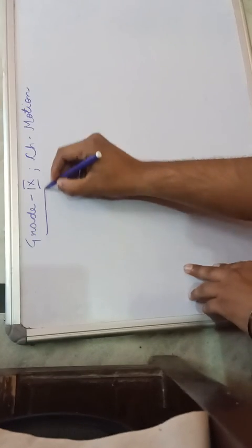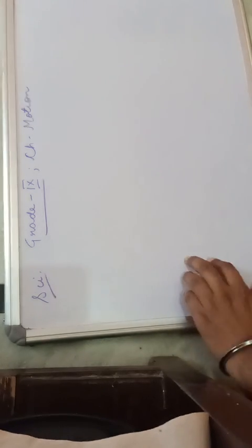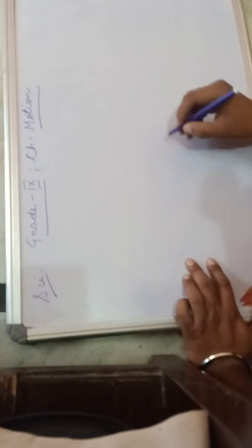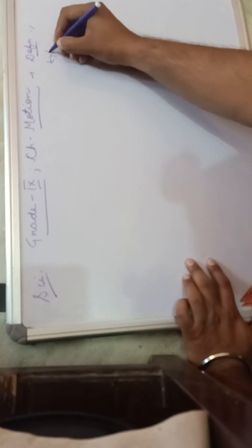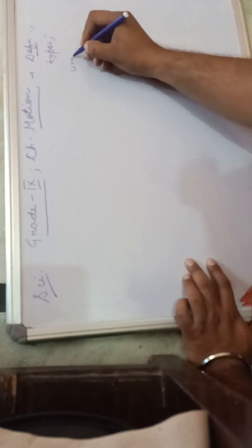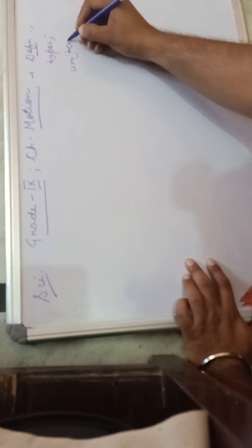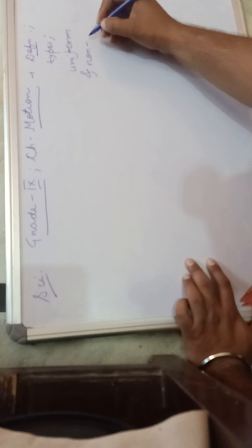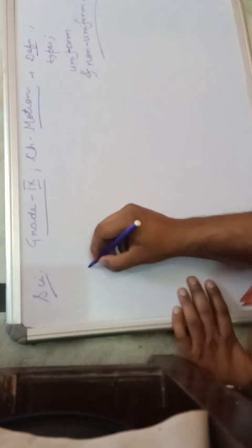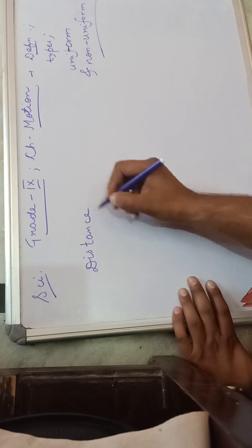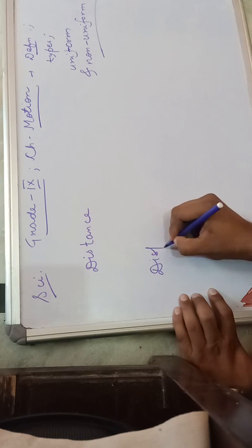Good morning students. Today's class is on Grade 9 Science, Chapter Motion. Previously we have studied about motion - its definition, types, and uniform and non-uniform motion. In today's lecture we are going to discuss the concept of distance and displacement, which is a very important and simple concept.